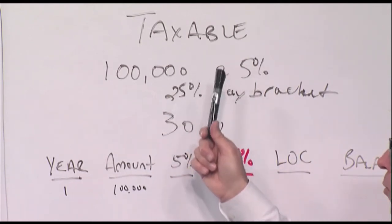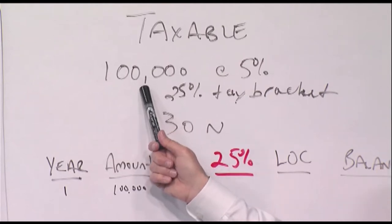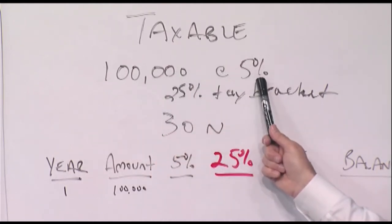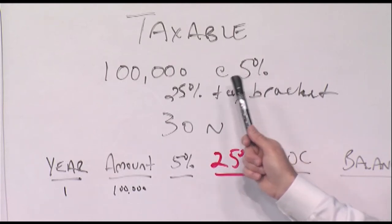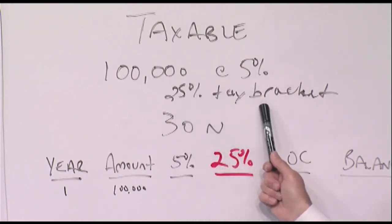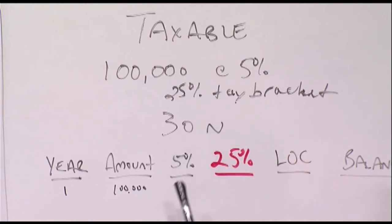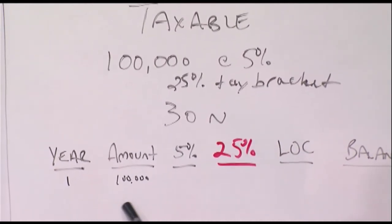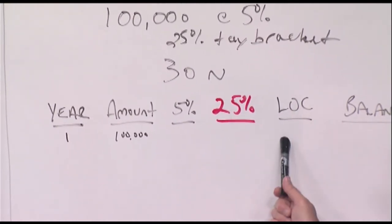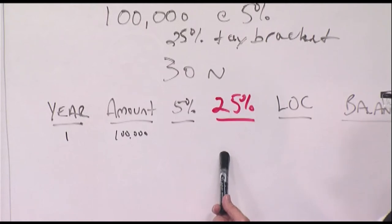So when we come back, Joe Lunchbox has $100,000 already taxed — that's called a non-qualified account. We're assuming he's going to make 5%, but we also have to bring in a tax bracket of 25% over the next 30 years. Already you can see this equation that we're going to calculate, and now we're introducing LOC — lost opportunity cost. It's going to startle you what's going to go on over the next 30 years.